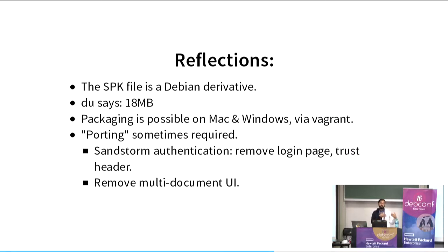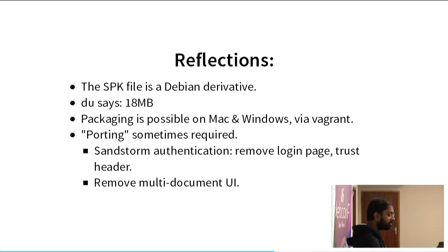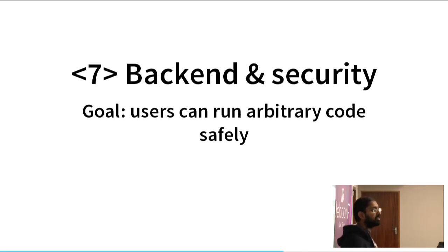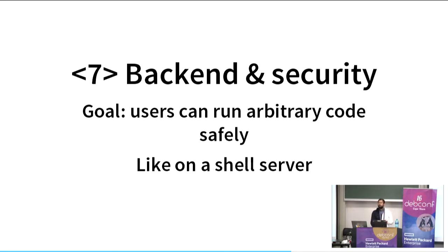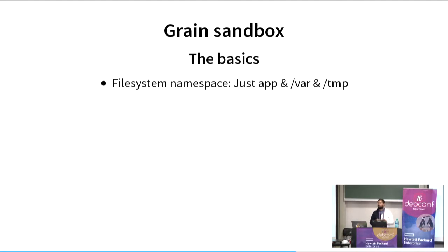It's not the case that you can take any random off-the-shelf web app, do this tracing thing, put it in a bundle, and run it successfully — you might need to make some changes relevant to Sandstorm, like looking at those headers, such as X-Sandstorm-Username. With those packaging steps briefly covered, I want to talk about the Sandstorm backend and security. We have this seemingly strange goal that users can run arbitrary code safely. Nowadays, 'arbitrary code' sounds like a security issue — 'oh no, arbitrary code execution' — but when I run a shell server for friends on Debian, the whole point is arbitrary code execution. It's the translation of that idea into a web app space.